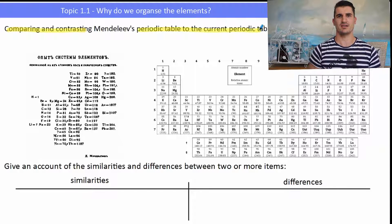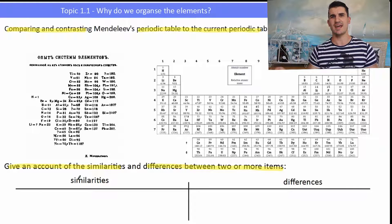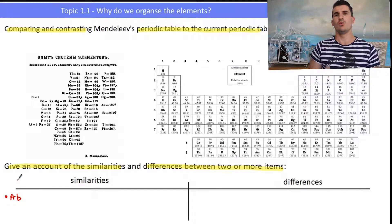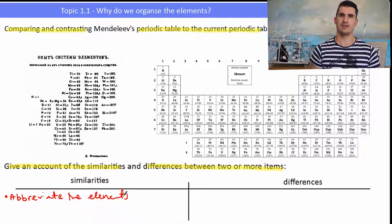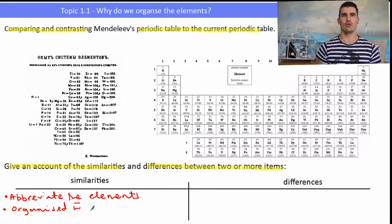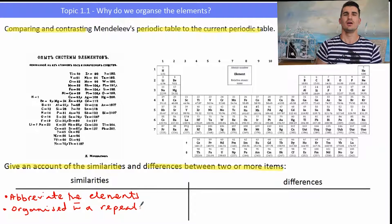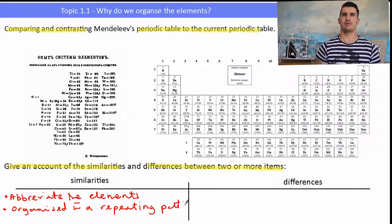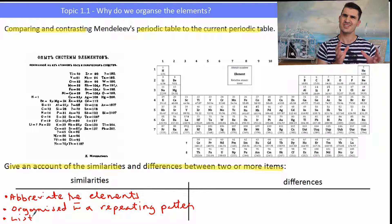We may be asked to compare and contrast Mendeleev's periodic table with the current day periodic table — compare and contrast means give an account of the similarities and the differences. Similarities: both use abbreviated element symbols; both list all elements available at the time; and both are organized with a repeating pattern. Mendeleev's pattern was based on atomic weight, whereas the current periodic table works on atomic mass, which is slightly different, but he definitely had the right idea.